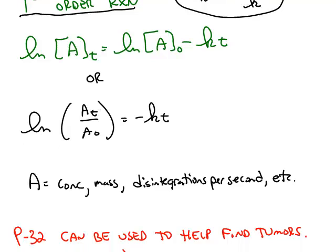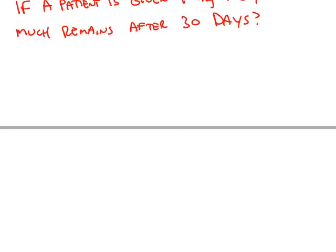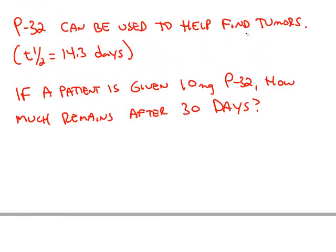So we can use that in a question like this one. Phosphorus-32 is a radioactive isotope that can be used to help find tumors. It has a half-life of just over 14 days. If a patient is given 10 milligrams, how much of that is going to remain after 30 days?